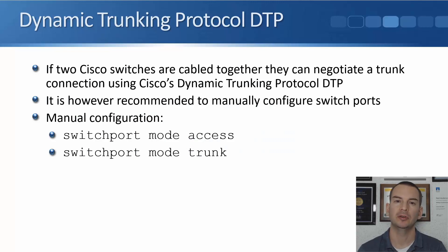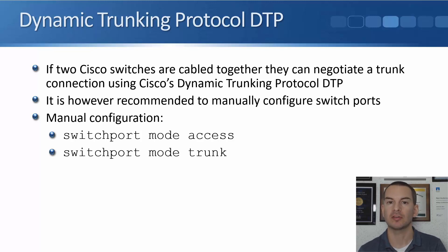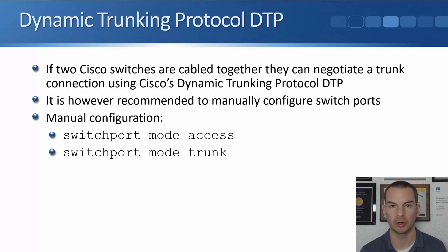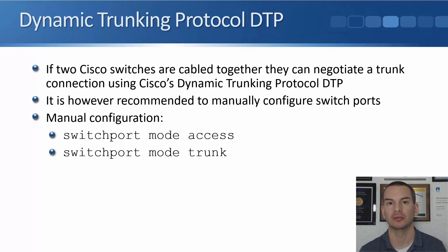In this lecture, you'll learn about DTP, the Dynamic Trunking Protocol. If two Cisco switches are cabled together, it's possible for them to automatically negotiate a trunk connection on those ports using Cisco's proprietary DTP Dynamic Trunking Protocol. It is, however, recommended not to use this — to manually configure the switch ports instead using the commands we've been using earlier in this section.